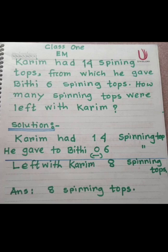The solution: Koream had 14 spinning tops and he gave to Vithi six spinning tops. So we need to find how many spinning tops are left.